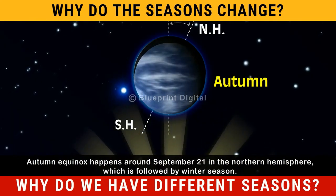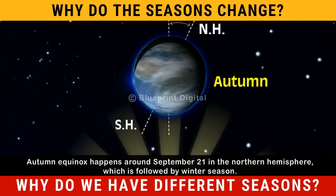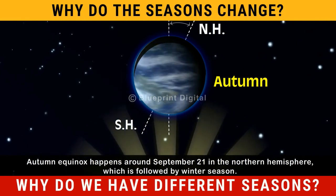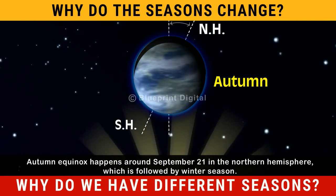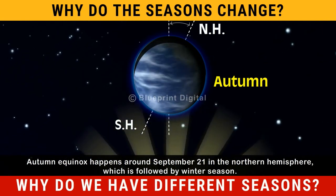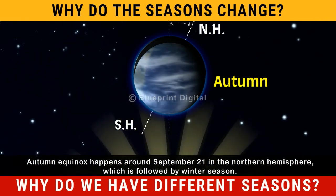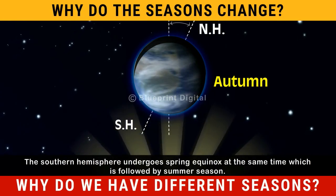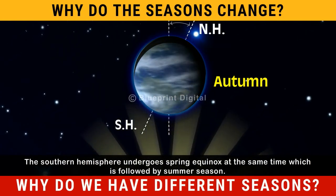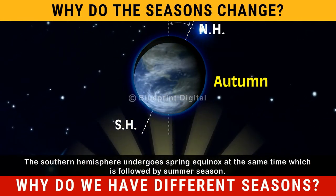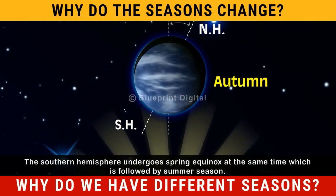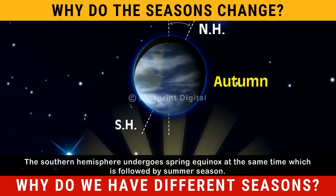Autumn equinox happens around September 21 in the Northern Hemisphere, which is followed by Winter season. The Southern Hemisphere undergoes Spring equinox at the same time, which is followed by Summer season.